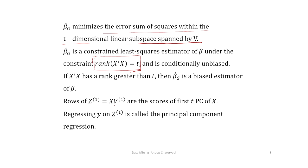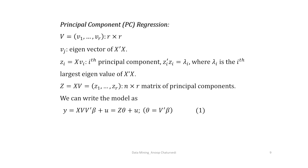Writing z₁ = XV₁, the rows of z₁ are called the scores of the first t principal components of X. Note that X is of order n×r and V₁ is of order r×t, so z₁ is of order n×t. If we regress y on z₁, this is called principal component regression.